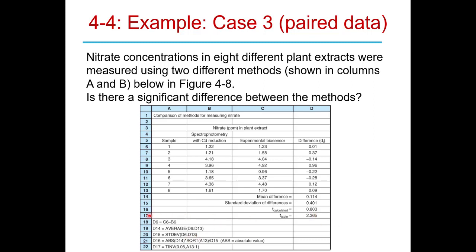Using the annotated formula in the spreadsheet, t_calc is computed from the absolute value of the mean difference times √n, divided by the standard deviation of the differences. We then compare to t_table at 95% confidence using =TINV(0.05, n-1). Since t_calc is less than t_table of 2.365, we conclude there is no statistically significant difference between the two methods — they agree within experimental error.